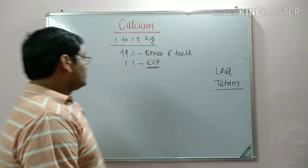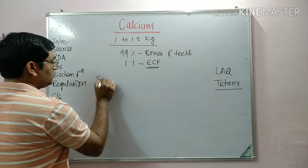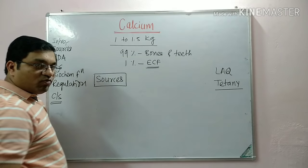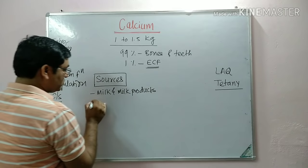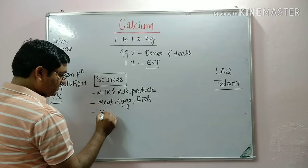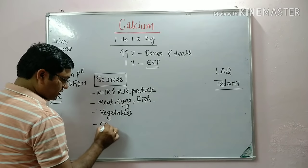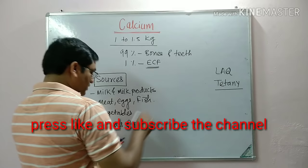Calcium is predominantly present in milk and milk products. The important sources include milk and milk products, meat, egg, fish, vegetables, cereals, and pulses. So these are the important sources of calcium.